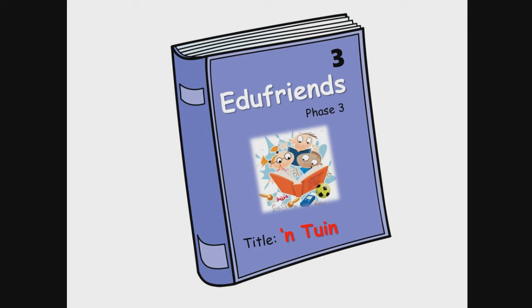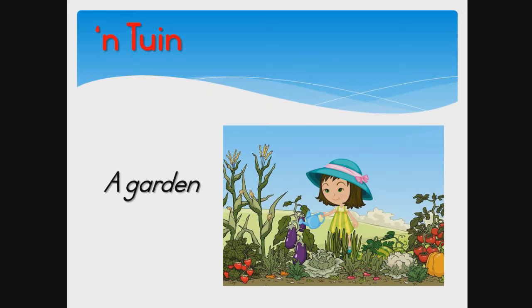Hi, everybody. Welcome to the EduFriends Afrikaans reading course. This is Book 3 of Phase 3. The title is 'a tuin', which in English means 'a garden'.